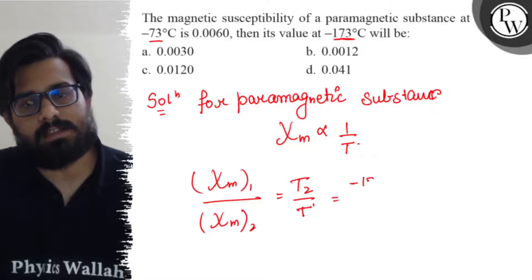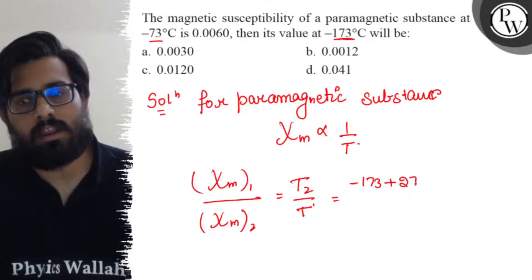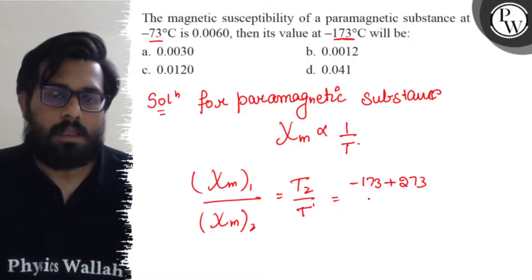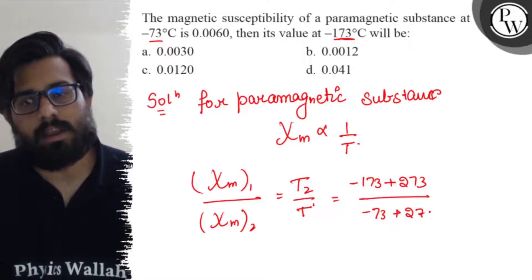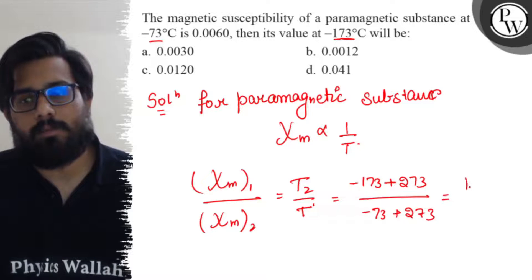T₂ can be written as -173 + 273, converting it to Kelvin, divided by T₁, which can be written as -73 + 273, converting it to Kelvin. It comes out to be 100 by 200.